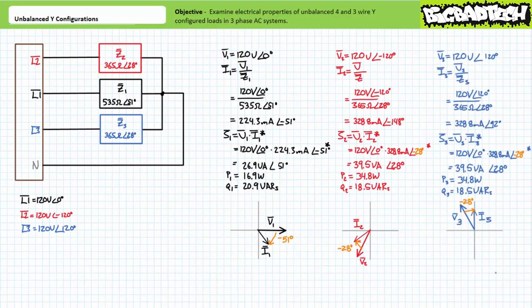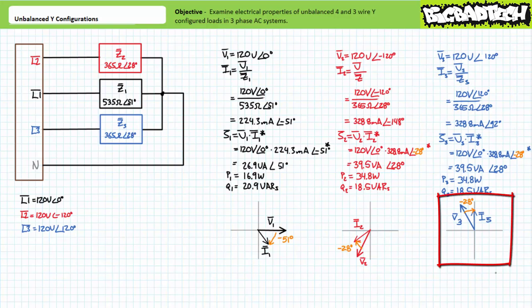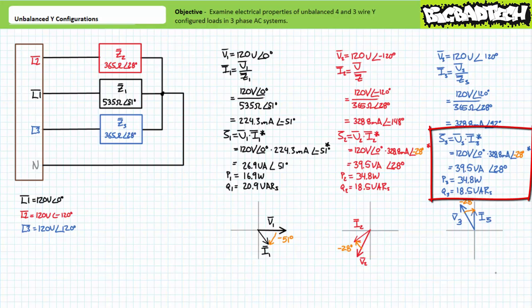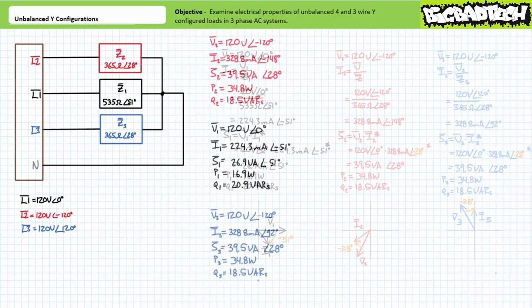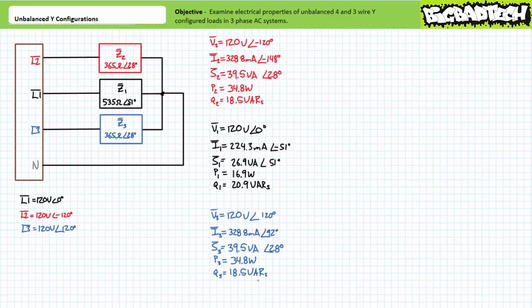Load impedance Z2 experiences 39.5 volt-amperes of apparent power, of which 34.8 watts is directed towards real power and 18.5 vars is directed towards the reactive interchange. Impedance Z3 is essentially a repeat of impedance Z2 only phase shifted by a relative 120 degrees. An application of Ohm's law for load impedance Z3 demonstrates current through it will be 328.8 milliamps at an angle of 92 degrees, lagging voltage by a relative 28 degrees. Load impedance Z3 also experiences 39.5 volt-amperes of apparent power, 34.8 watts real power, and 18.5 vars reactive power. Let's now examine total apparent, total real, and total reactive power for this complete circuit.